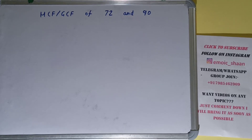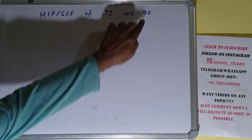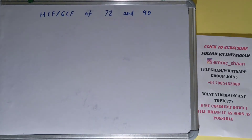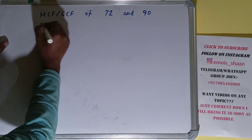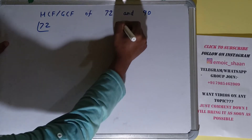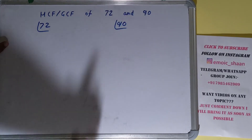Hello friends, in this video I'll be helping with the HCF or the GCF of the numbers 72 and 90. So let's start. To find it out, we first need to write each of the numbers separately.